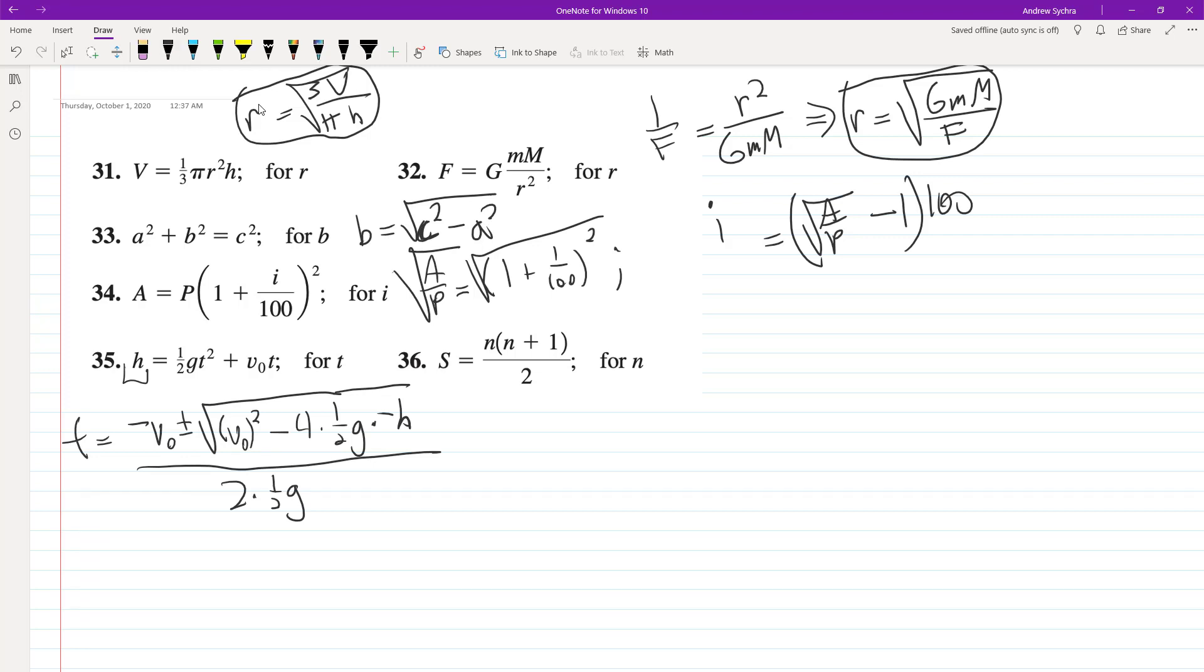So this essentially whittles down to T = -V₀ ± √(V₀² + 2GH) because the negative values cancel out.